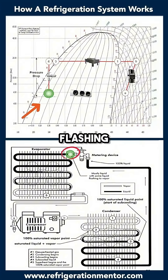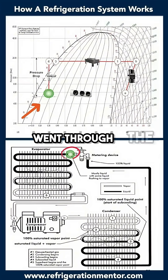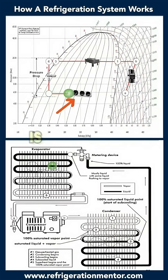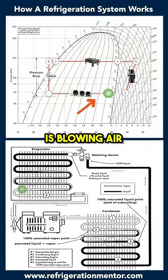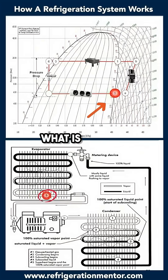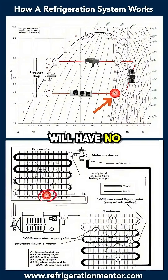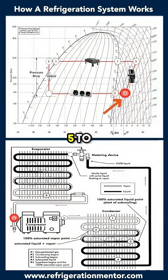It's flashing out of that TXV. As you can see, it just went through the metering device and now we're back into the two-phase region inside that thumbprint. The evaporator is blowing air over the coil, causing the refrigerant to boil, so by the time it hits that dew point again you'll hopefully have no liquid left — and now here's your superheat from 5 to A.